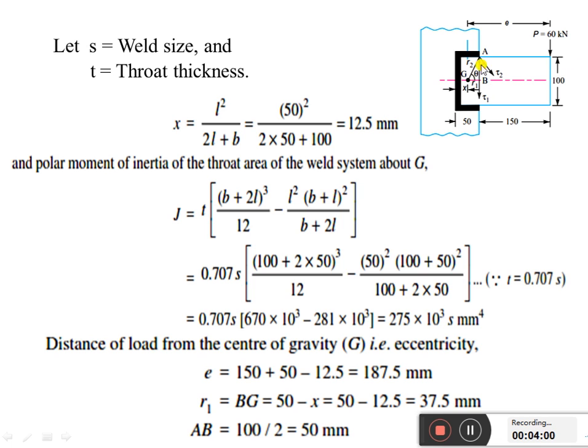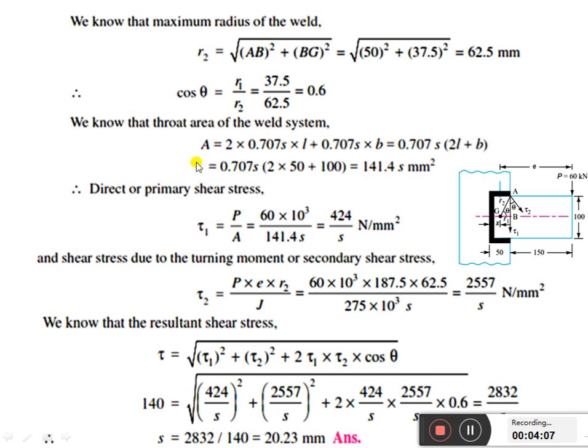We know the maximum radius of the weld R2. The R2, the hypotenuse, we have to find. R2 equals root of AB² plus BG². So AB is 50 square and BG is 37.5 square. You can get the value of 62.5 mm.